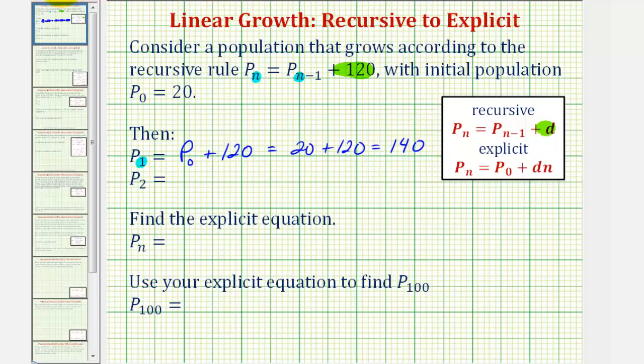When we find P₂, n is now equal to two. So P₂ is equal to P₂₋₁ or P₁ plus 120. Well, we just found P₁. P₁ equals 140. So we have 140 plus 120 which equals 260.